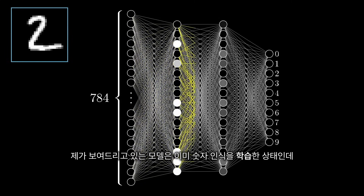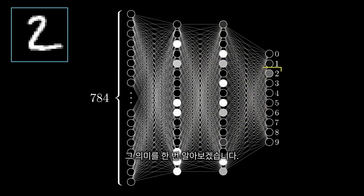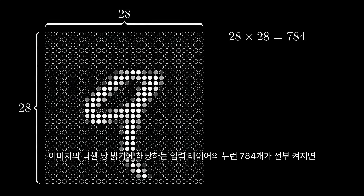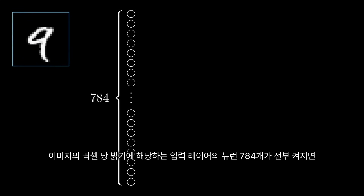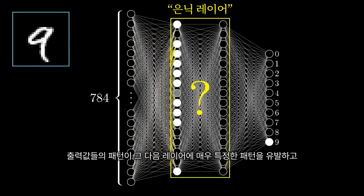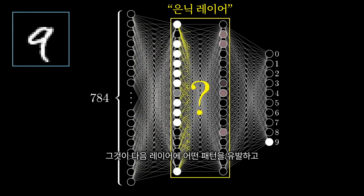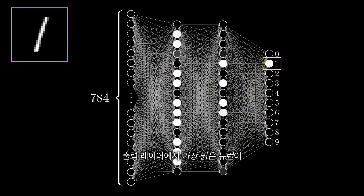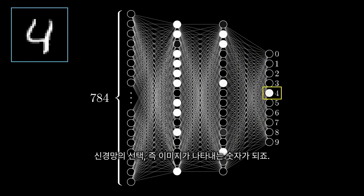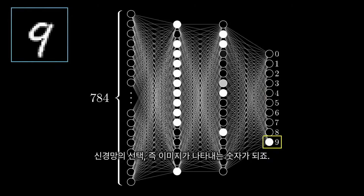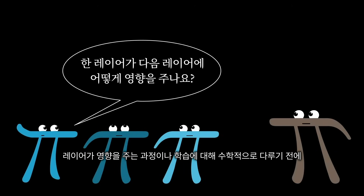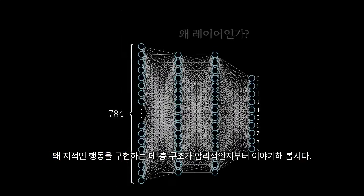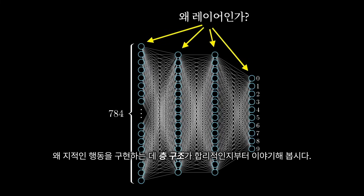Now, the network I'm showing here has already been trained to recognize digits. It means if you feed in an image, lighting up all 784 neurons of the input layer, that pattern of activations causes some very specific pattern in the next layer, which causes some pattern in the one after it, which finally gives some pattern in the output layer. And the brightest neuron of that output layer is the network's choice, so to speak, for what digit this image represents. And before jumping into the math for how one layer influences the next, or how training works, let's just talk about why it's even reasonable to expect a layered structure like this to behave intelligently.